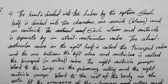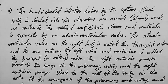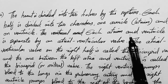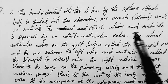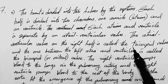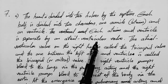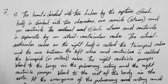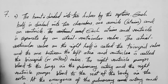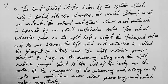The heart is divided into two halves by the septum. Each half is divided into two chambers — one atrium and one ventricle. Each atrium and ventricle is separated by an atrioventricular valve. The atrioventricular valve on the right half is called the tricuspid valve, and the one on the left atrium and ventricle is called the bicuspid valve, also known as the mitral valve.